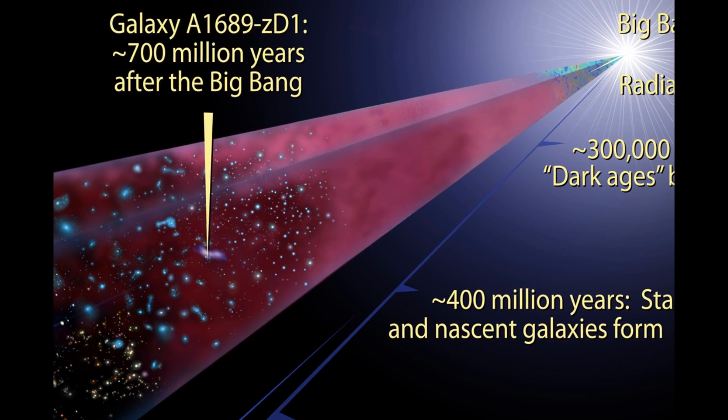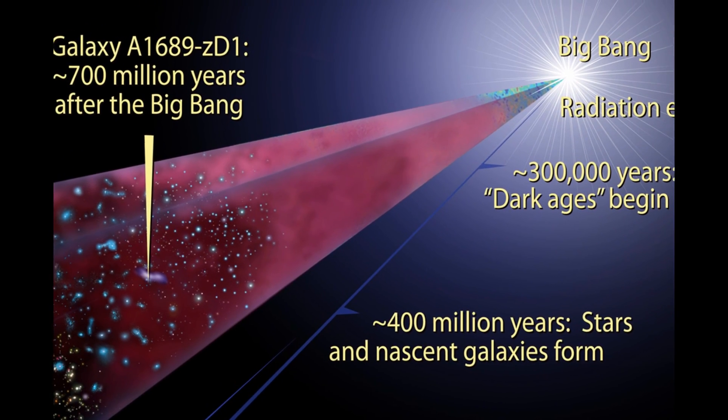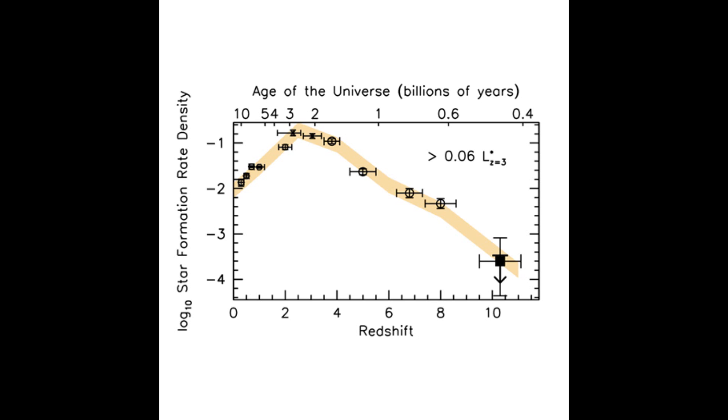Needless to say, astronomers do not find that all of the stars formed in 24 hours, 6,000 years ago. Instead, they find that stars began forming within a few hundred million years after the Big Bang.